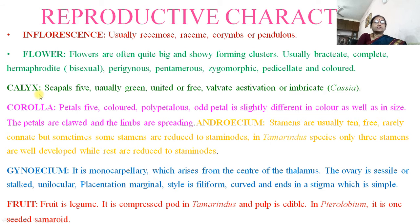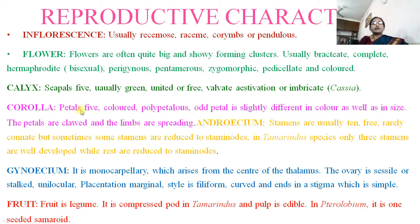Calyx is made up of five sepals, usually green, united or free, with valvate or imbricate aestivation. Corolla is made up of five petals, colored and polypetalous — the petals are separate. All petals are slightly different in color as well as in size; the petals are clawed and the limbs are spreading.